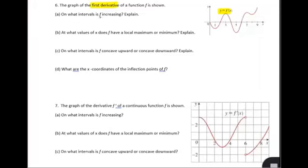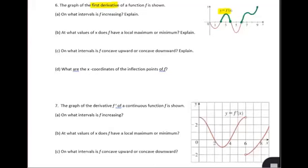In part a, it's asking us on what intervals is the original equation increasing. If we have the graph of the derivative, where it is above the x-axis, the original would have been increasing. So if it is above the x-axis — that would be from 2 to 4, then it dips below, and then it's above again from 6 to 9. So that's from x equals 2 to x equals 4, and again on the interval from 6 to 9. The reason is because that is where the derivative is above the x-axis.